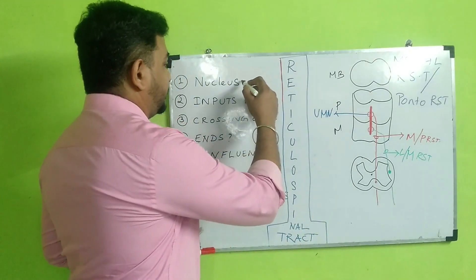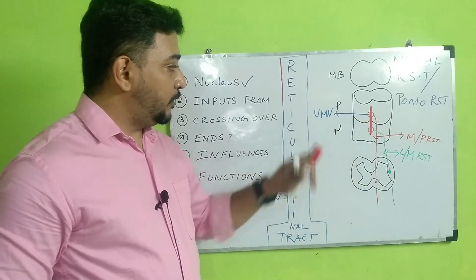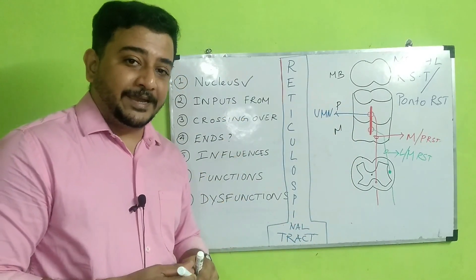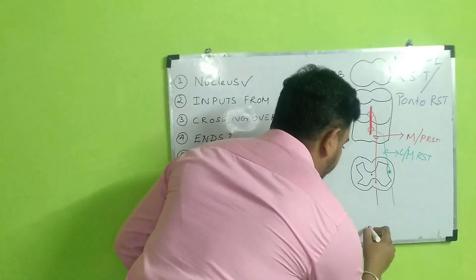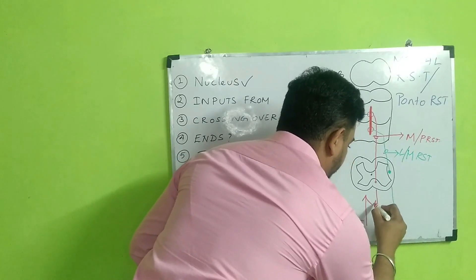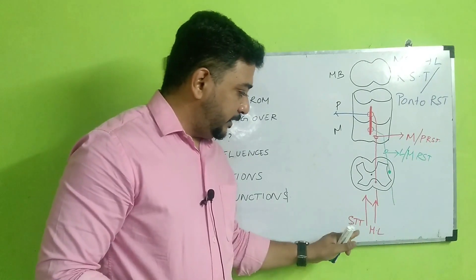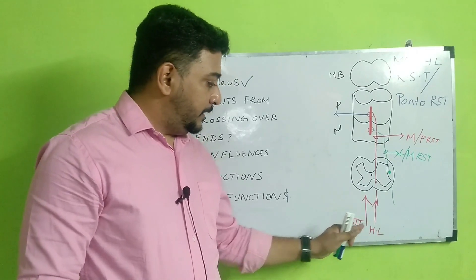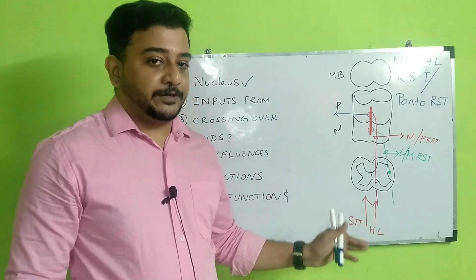We have seen the nuclei locations for the two tracts — one in the pons and one in the medulla. Next, we look at where these two tracts get their inputs from. They receive input importantly from ascending information coming from the spinothalamic tract and also from the medial lemniscus. The spinothalamic tract carries pain, temperature, touch, and mild pressure.